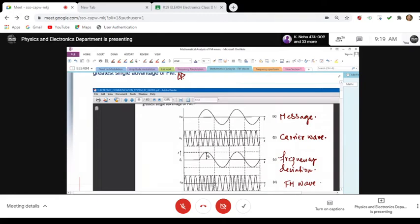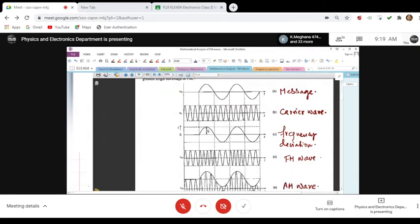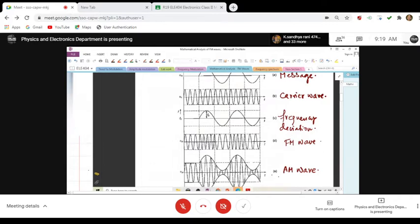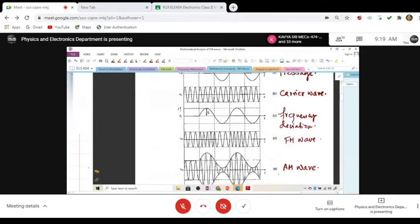This is similar to what we have done. What is important is that the amplitude remains constant in this case. Amplitude is not changing in all these figures. Whatever the magnitude, it remains the same for all. It is the frequency which is changing, coming closer and deviating. At the point where it is maximum amplitude, it is coming closer.